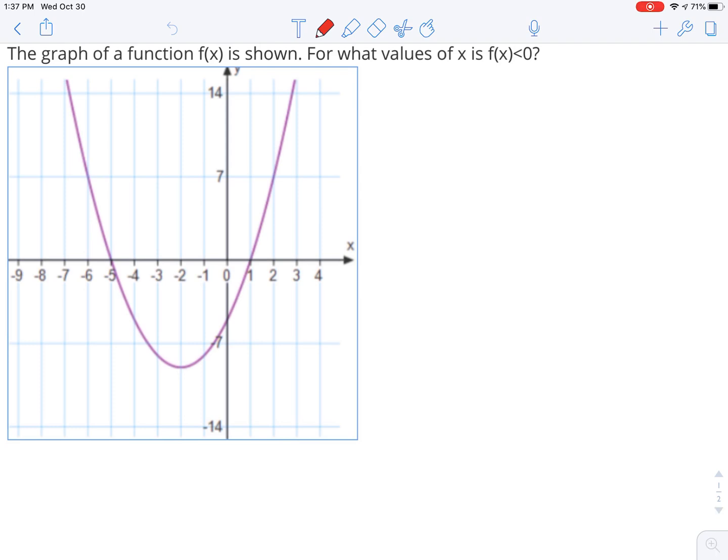I notice that it crosses the x-axis at negative 5 and 1. So when the question says, for what values of x is f(x) less than 0, what kind of numbers are less than 0? They're negative.